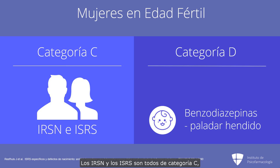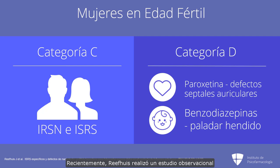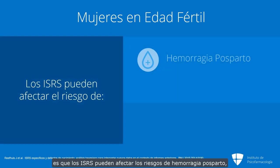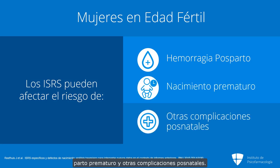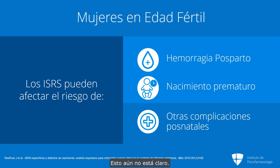SNRIs and SSRIs are all Category C, except paroxetine, which is Category D — atrial septal defects are the concern with paroxetine. A recent large observational study by Reefwies confirmed that the Category D designation is deserved by paroxetine. The last point for women of childbearing potential is that SSRIs may affect risks of postpartum hemorrhage, premature delivery, and other postnatal complications. These are statistical findings but may be due to confounding by indication — it's unclear whether the complications are caused by the antidepressant or by the underlying condition being treated.